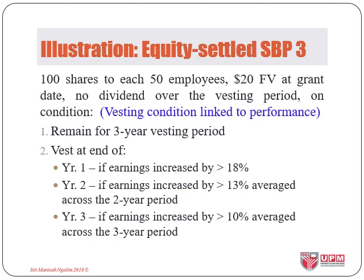In the third illustration, instead of share options, the company granted shares to 50 employees with a fair value of $20 at grant date and a performance condition attached. They must remain in the company for three years. The performance target states: if earnings increase by more than 18% in year one, the scheme vests at end of year one. If less, it extends to year two; if average earnings exceed 13% across years one and two, the scheme vests at end of year two. Otherwise, it extends to year three where a 10% average is required.